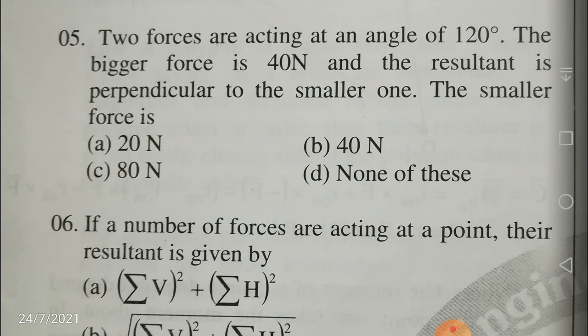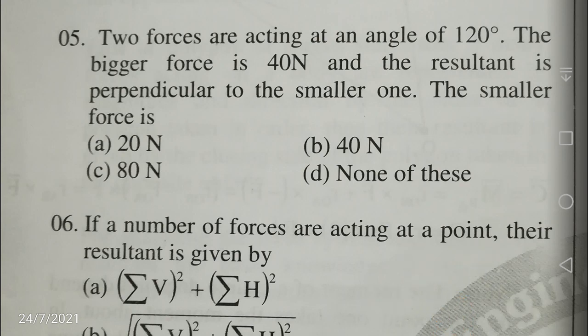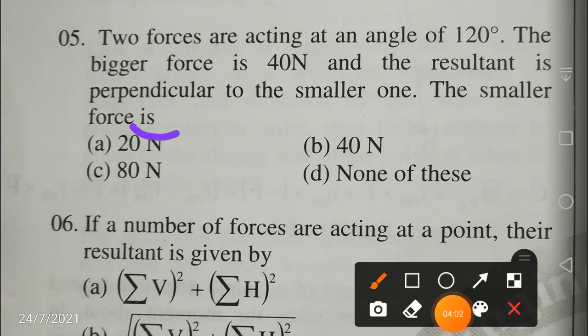Here Q, the bigger force, is equal to 40 Newtons. So 40 cos 60 is equal to P, that means 40 into 1/2, which gives P equal to 20 Newtons. So the smaller force is equal to 40 into 1/2, that is 20 Newtons. Your answer is A.